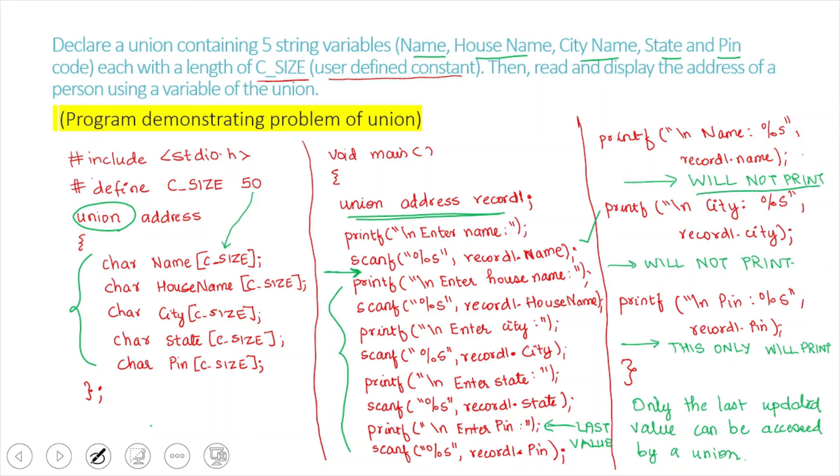If we ask the computer to print the city, that will also not print. But the last one, that is record1.pin, only that will be printed. So, only the last updated value can be accessed by a union. So, this is a problem of the union.